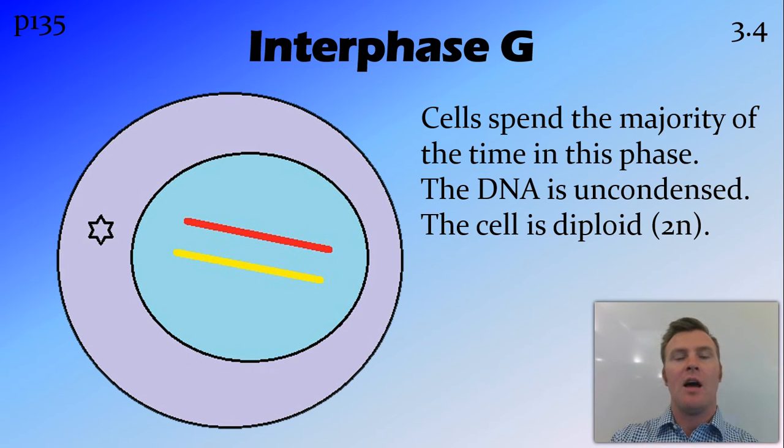So it would have come from a daughter cell, from a previous mitosis or meiosis, depending on the cell, turned into interphase, and sat there for a while, and now we're going to get into meiosis itself.